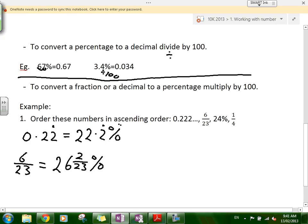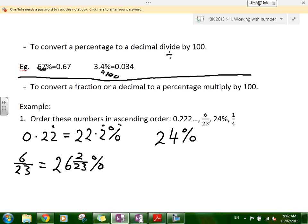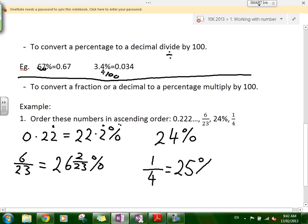24% is a percentage already, so we're not going to have to change it. And what's one quarter as a percentage? One quarter - a quarter of 100 is 25. 25%.